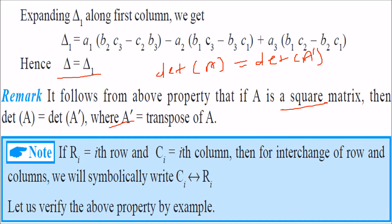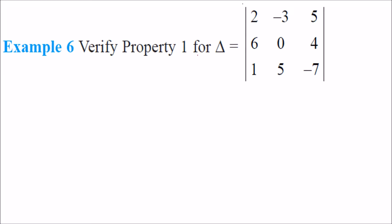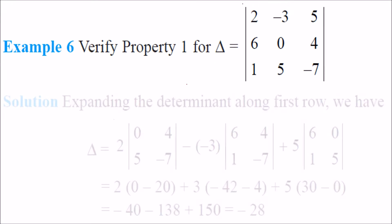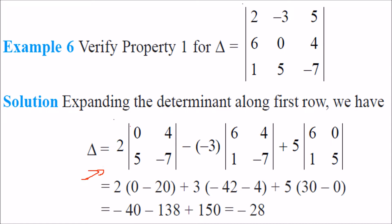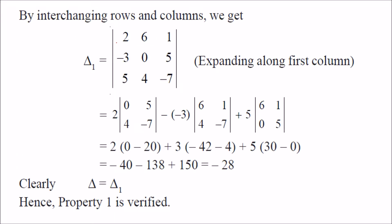When we change from row to column, we write C-R, that is changing from column to row. The second row goes to the second column. To verify Property 1, we change row to column. Let us solve this first, expanding with row 1. Then transpose the rows and columns and find the result. You see that both results are exactly the same.